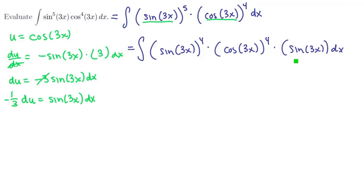Alrighty. Now this piece right here is the differential that we fitted. So we'll replace that with a negative 1 third du. These cosines can be replaced with just u. So we'll have a u to the fourth.